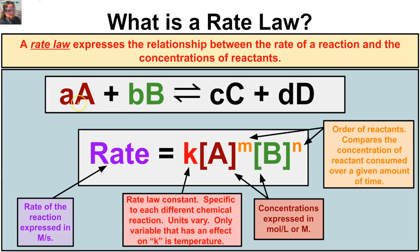For example, if we have a chemical reaction where A is reacting with B to produce C plus D, and we wanted to write the rate law for this reaction, it's going to be rate equals K times the concentration of A raised to the power of M, where M is the order of that reactant, times the concentration of B raised to the power of N, where N is the order of that reactant. We learned how to write the rate law, determine the order of the reactants, and determine the order of the entire reaction.